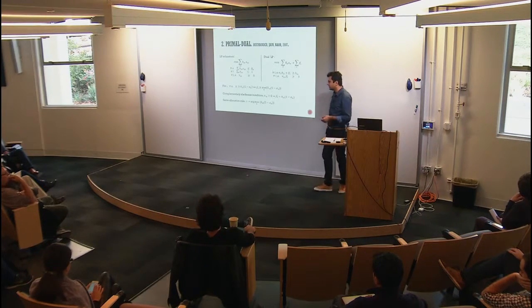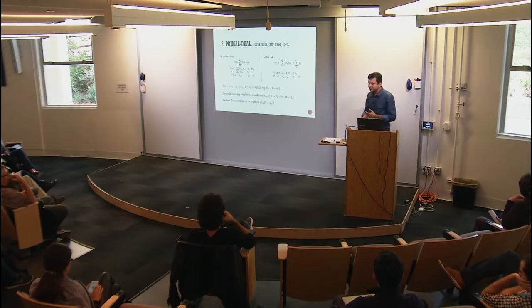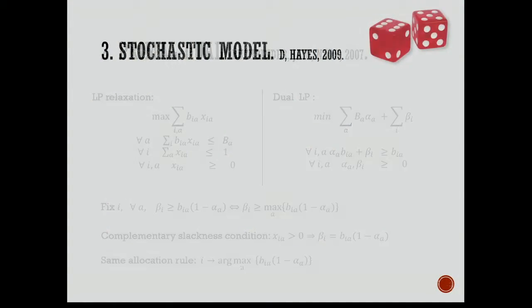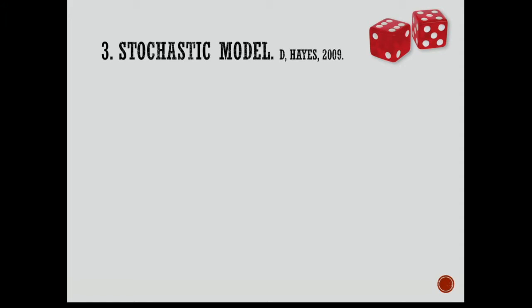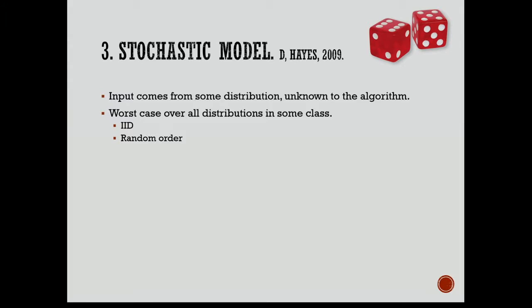We have this nice algorithm — so what do you do next? The thing is, real-world instances don't really look like the instances that induce this 1 minus 1/e ratio. There are instances that force no algorithm to get better than 1 minus 1/e, but real-world instances don't look like that. Because of that, people started thinking about what else we can do — how can we capture what real-world instances look like? And they turned to stochastic models.